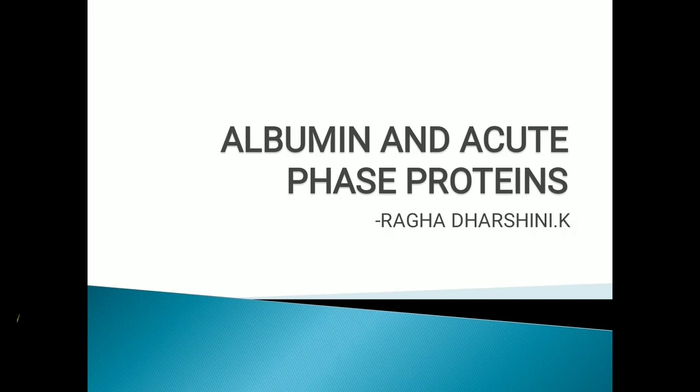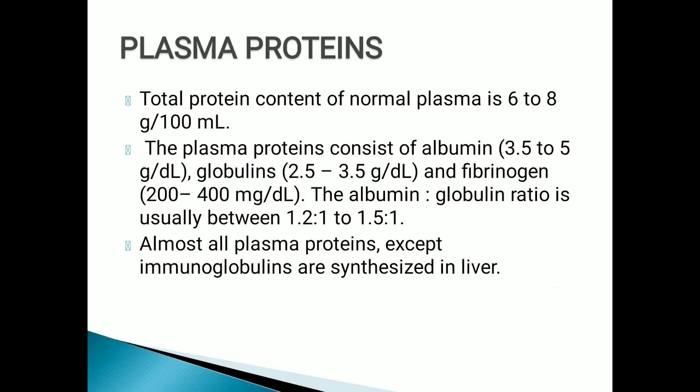Good morning. Today's topic is albumin and acute phase proteins. To talk about albumin, we must know what plasma protein is. Plasma is a part of blood; after centrifugation, RBC and WBC settle down and the supernatant fluid is called plasma. When we take them into agar gel electrophoresis, we can see five bands representing the plasma proteins.